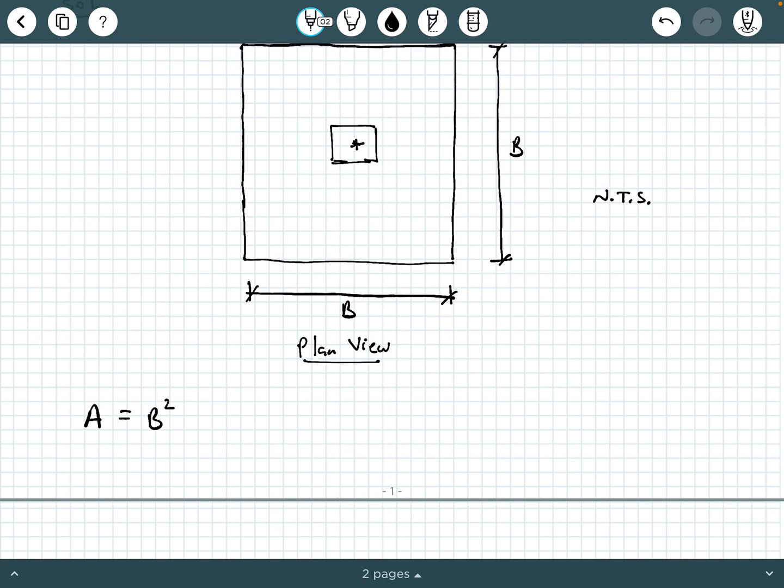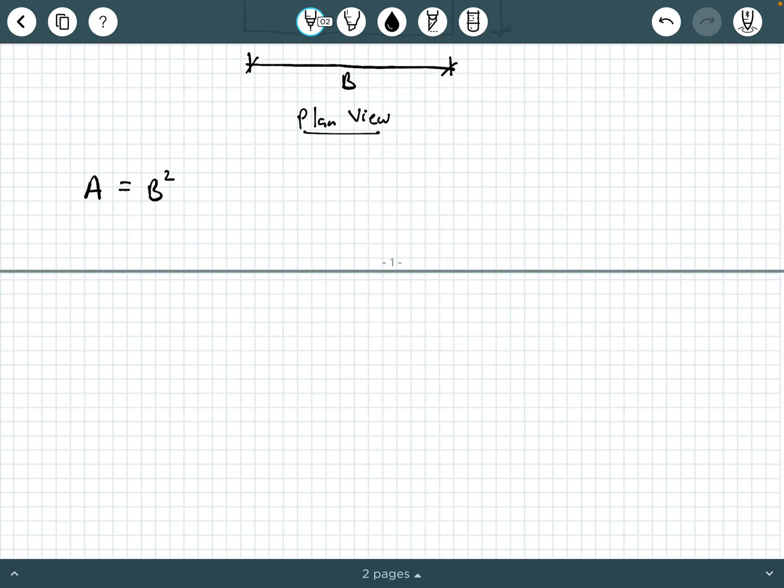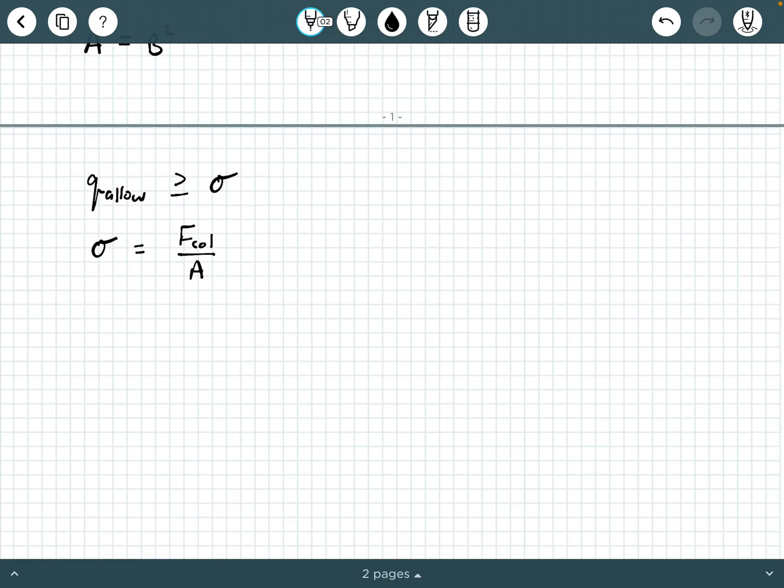Now, if you remember the video before this, you watched the background information on this topic. We know that Q allowable should be bigger than or equal to the applied bearing pressure σ. We know that the applied bearing pressure σ comes from the column force divided by the area. So if you recall from the end of the previous video, we can set up the relationship Q allowable must be bigger than or equal to F call over A. And then we can solve for A, and we can say A is bigger than or equal to F call over Q allow.